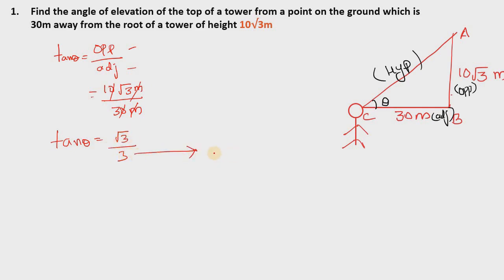In the denominator, 3 can be written as square root 3 times square root 3. So tan theta equals root 3 divided by root 3 times root 3. The root 3 in numerator and denominator cancel.